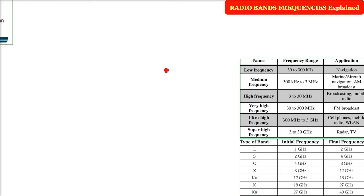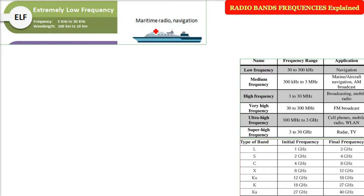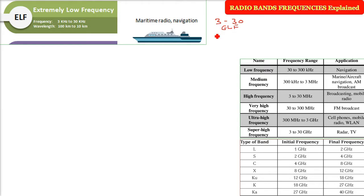We'll start with the lowest frequency, which is from 3 kilohertz to 30 kilohertz. Please remember it is kilohertz — 1 kilo means 10 to the power 3. Hertz is the basic unit. This is called the Extremely Low Frequency (ELF). The wavelength is quite high.